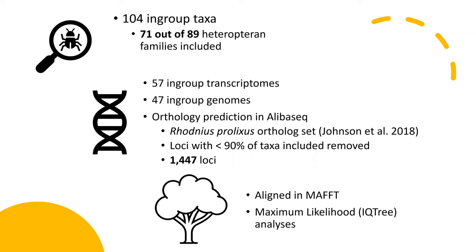We ran orthology prediction in a software package called OrthoSeq. I used Rhodnius prolixus as my ortholog set to make these orthology predictions. I wanted to reduce missing data as much as possible, so I removed all loci that had less than 90% of the taxa included. That ended up with a data set of about 1,400 loci.